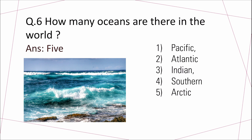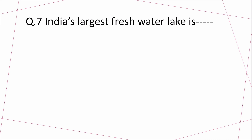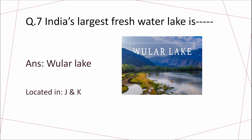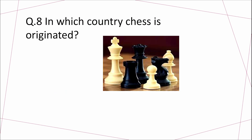Question 6: How many oceans are there in the world? Answer: 5. This is the order of oceans from the largest to the smallest: Pacific Ocean is the largest, then Atlantic Ocean, Indian Ocean, Southern Ocean. Arctic Ocean is the smallest ocean. Question 7: India's largest freshwater lake is? Answer: Wular Lake. It is located in Jammu and Kashmir.